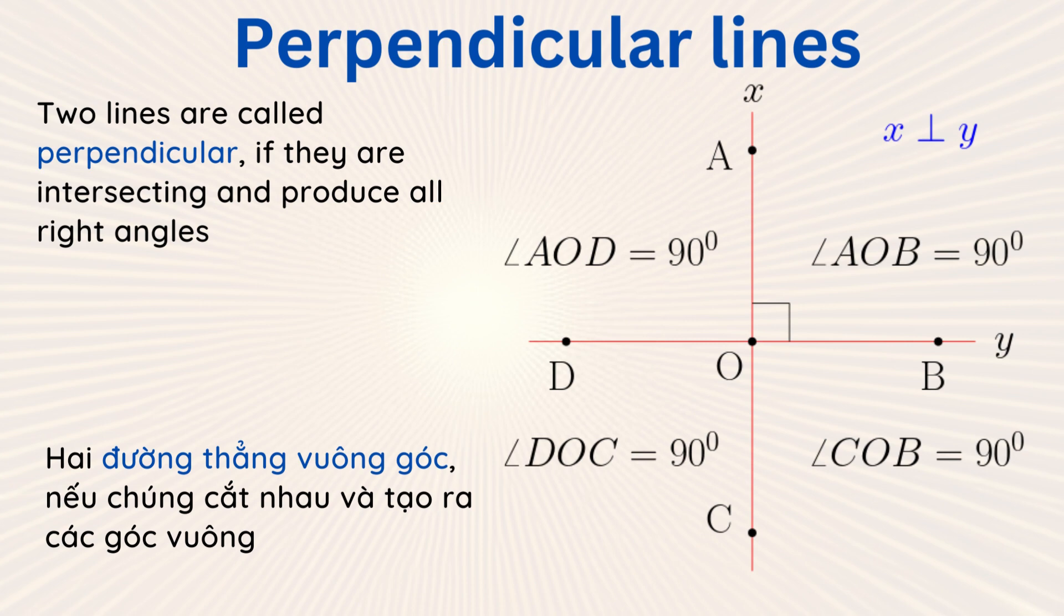The points A and C belong to the line X and B, D to the line Y. These two lines are perpendicular because they create four right angles: AOB, AOD, DOC, and COB.